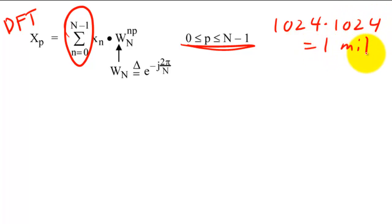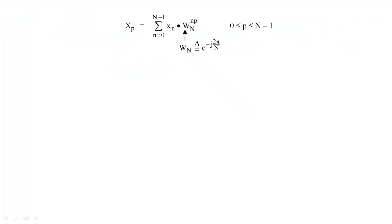As you might guess, we would rather not perform a million calculations to compute the DFT. When we calculate the DFT, we will multiply every sample by the same exponential term raised to different powers.